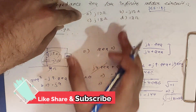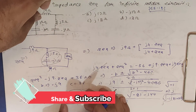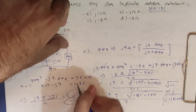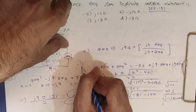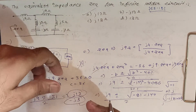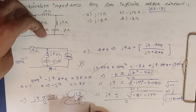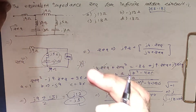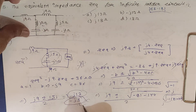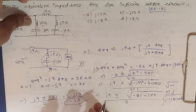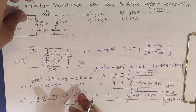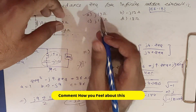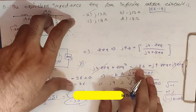Note: for infinite ladder resistance problems, the negative root is discarded. But for impedance problems, both values are valid in principle — here j12 matches the options, so that is the answer. That's it for today, thank you!